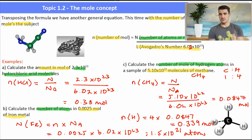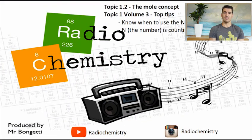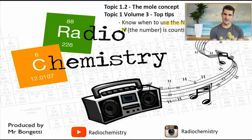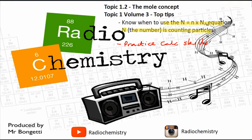Topic 1, Volume 3 top tips: you need to know when to use the N = n × Nₐ equation, and think of big N as counting particles. Practice using your calculator — practice keeping numbers in there and rounding at the end, because this whole topic has some calculator skills in it. Thanks for watching guys. Don't forget to drop a like on the video, subscribe if you're new, and I'll see you next time.